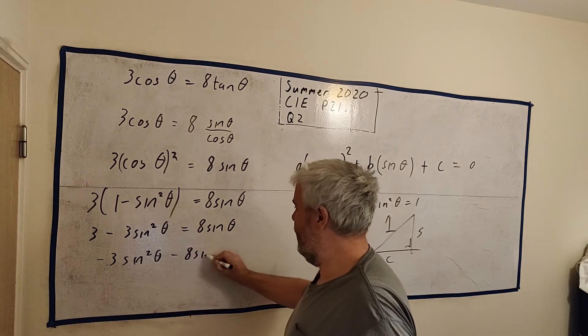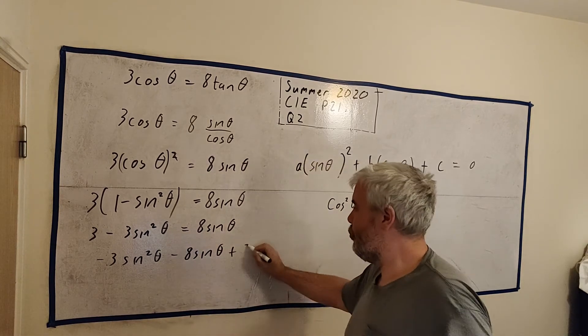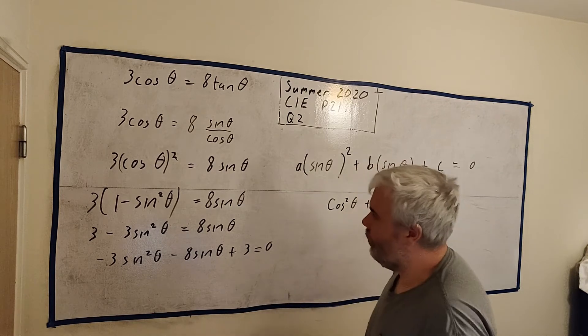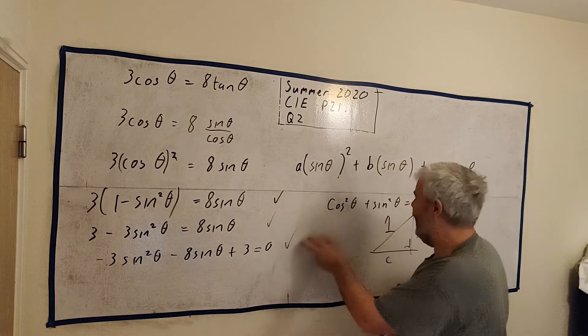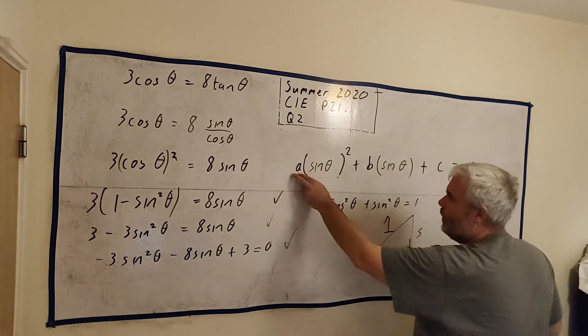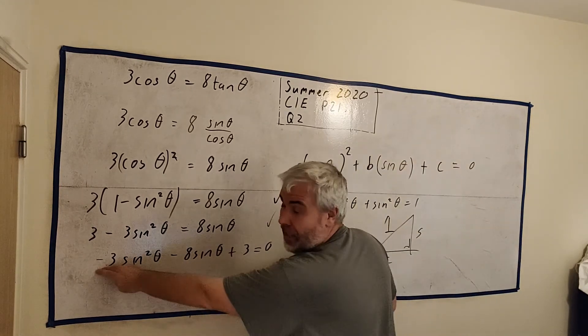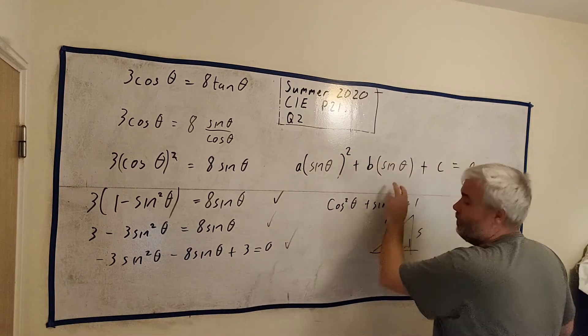Let's get everything on the same side and the squares first. Minus 3 sine squared theta minus 8 sine theta plus 3 equals 0. By the way, this would probably be full marks, this would be full marks, this would be full marks. I like to leave it, though, at least at this side. I'm going to go one more line. But I like to leave it looking like this. A number times sine squared, minus 3 in this case. A number times sine, minus 8 in this case. And a number. And it equals 0.